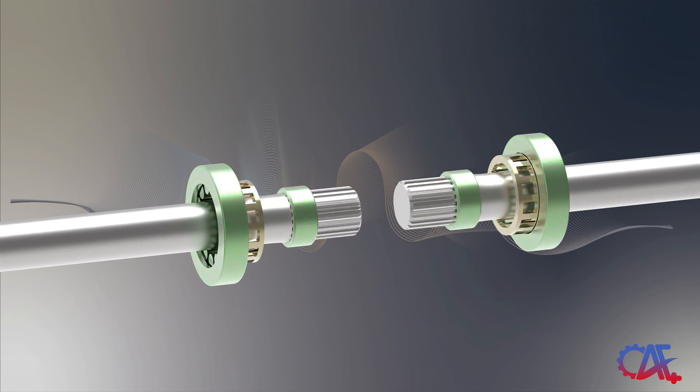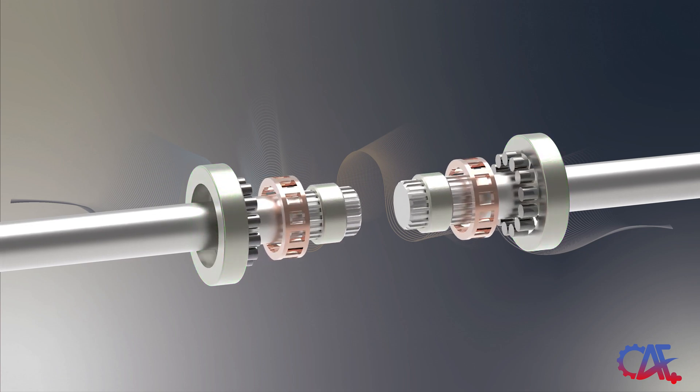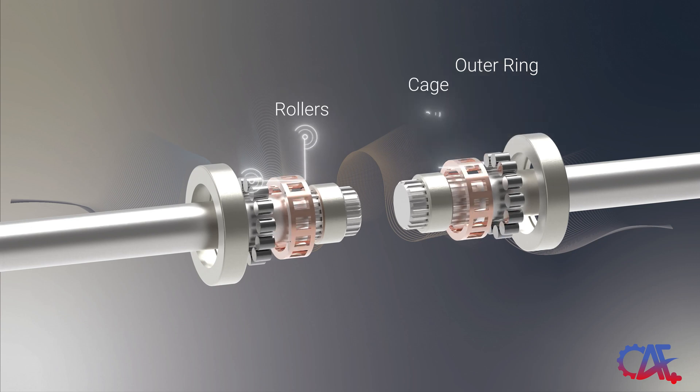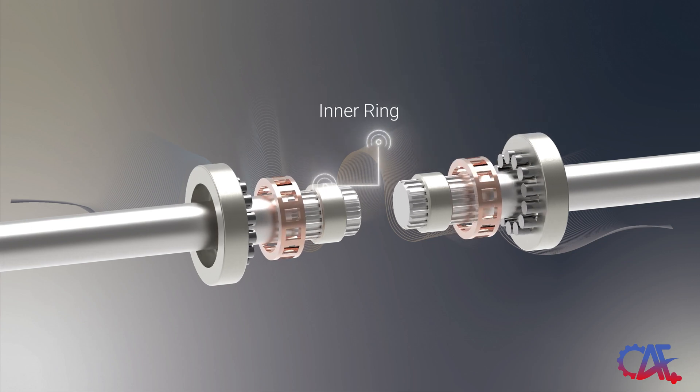As highlighted earlier, these bearings comprise four main components: an outer ring, hardened cylindrical steel rollers, a cage to keep the rollers properly aligned, and an inner ring.